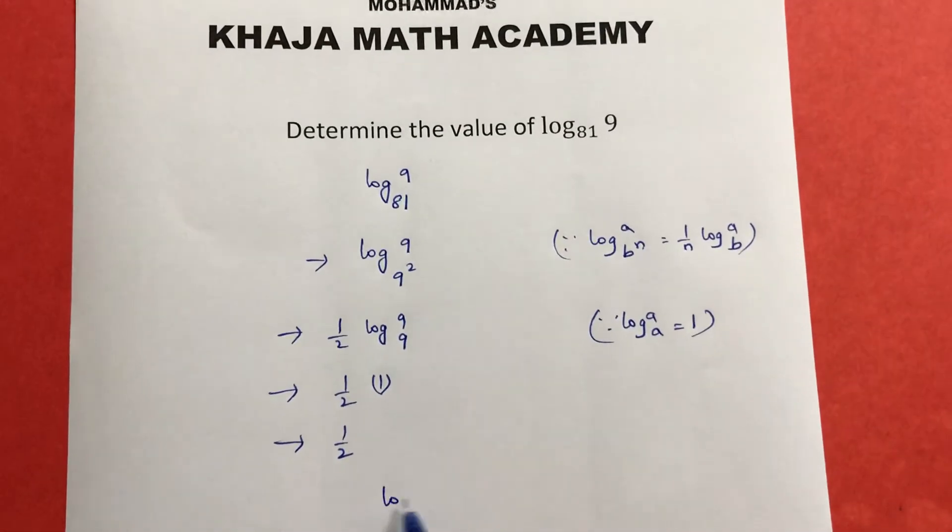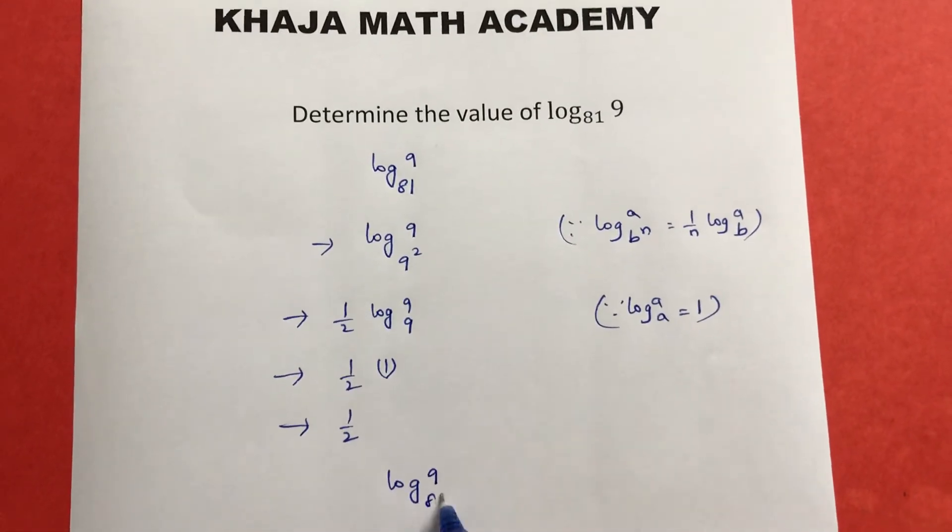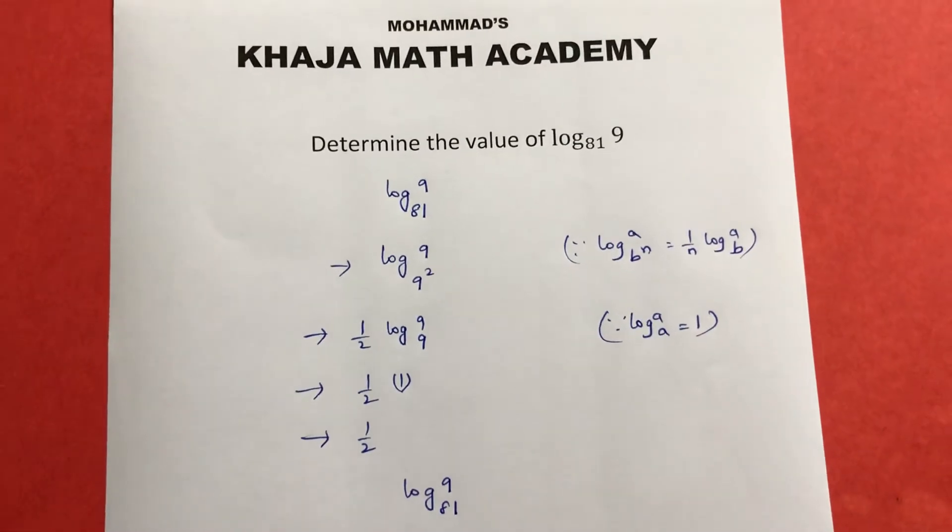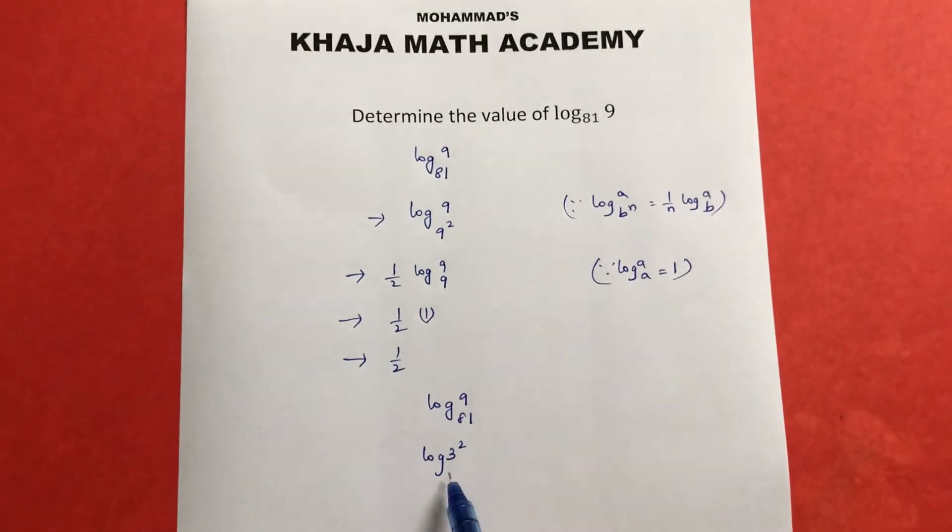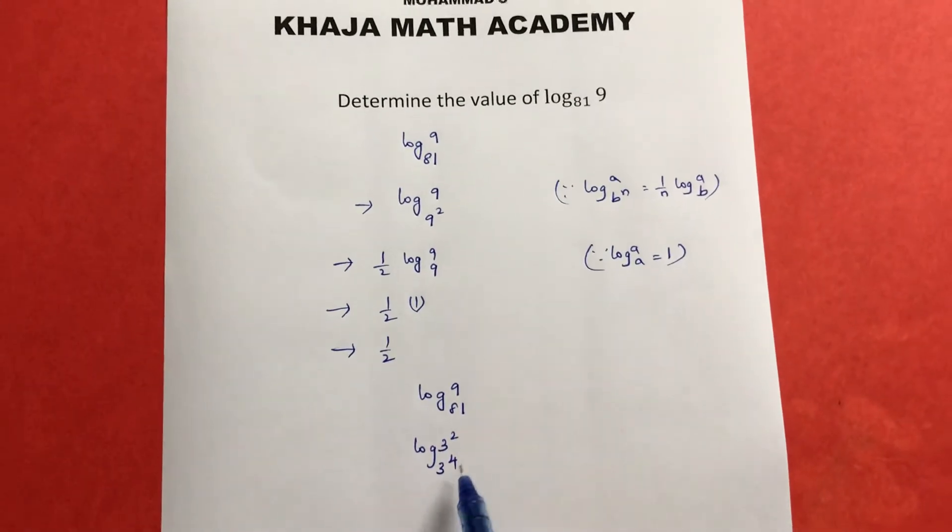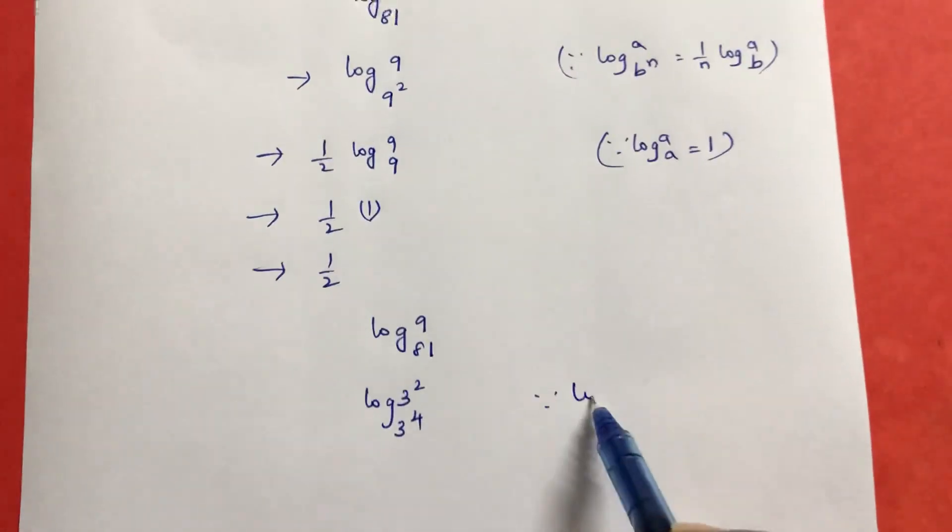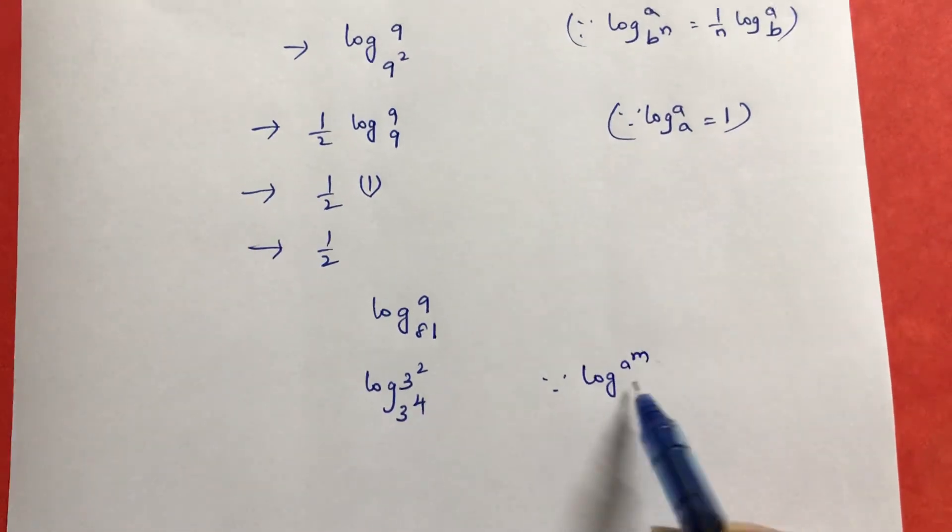You can use log 9 to the base 81. 9 you can write as 3 square, 81 you can write as 3 power 4. Then the formula will be: log a to the power of m to the base b power n...